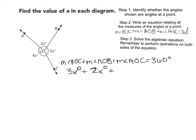And the measure of angle AOC is 4x degrees, which will all equal, when added together, 360 degrees.